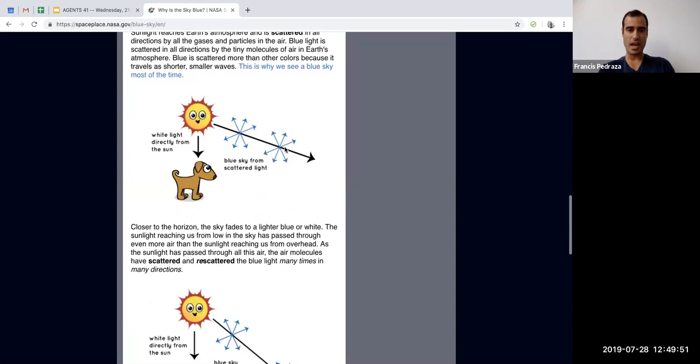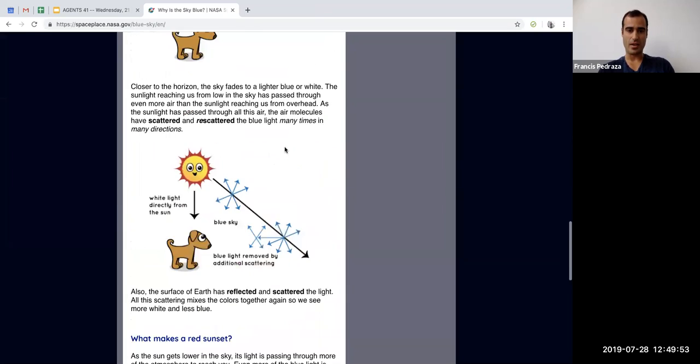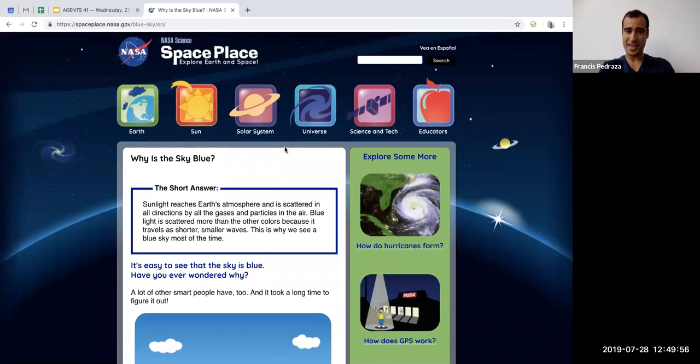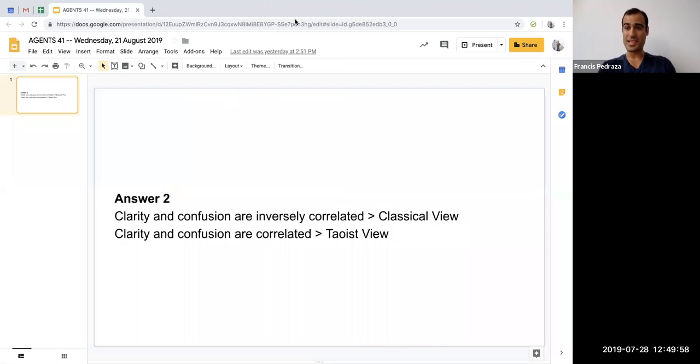You see what I mean? Like if we actually studied, oh my gosh, like it goes on and on and on. If we actually studied this page, and this is a science for kids, but if we actually studied this page, we would realize it's so complicated. You can't even, it's so hard to really understand why the sky is blue. So the Taoist understanding is that as you increase in clarity and you understand more and more and more about why the sky is blue, you also increase in confusion because the amount of questions explodes. So they are correlated. They go in the same direction. You become more clear and more confused at the same time.